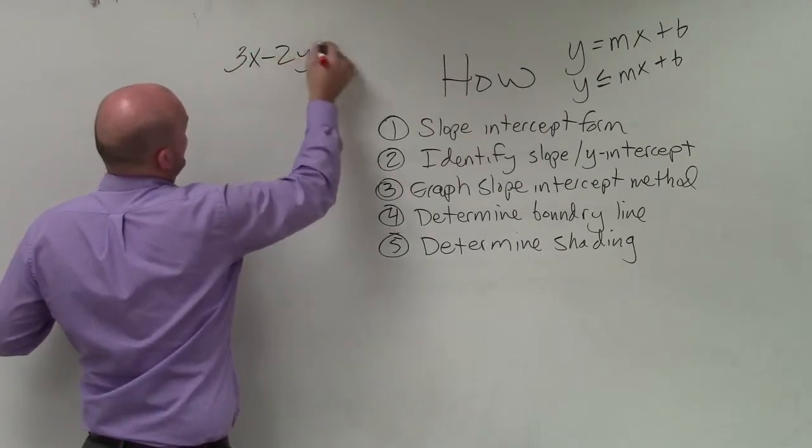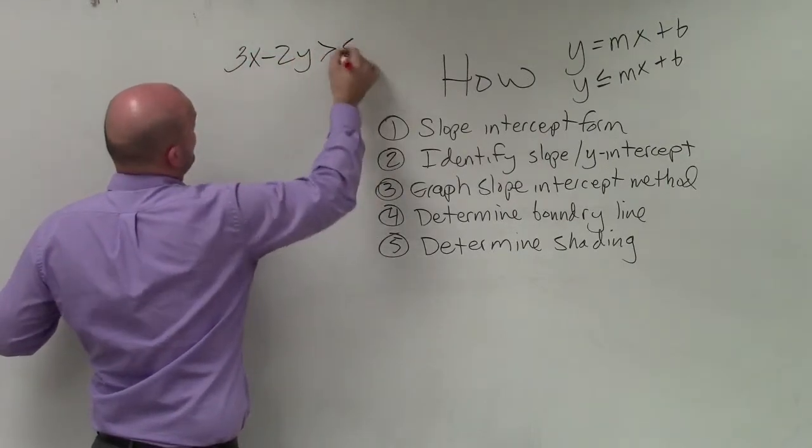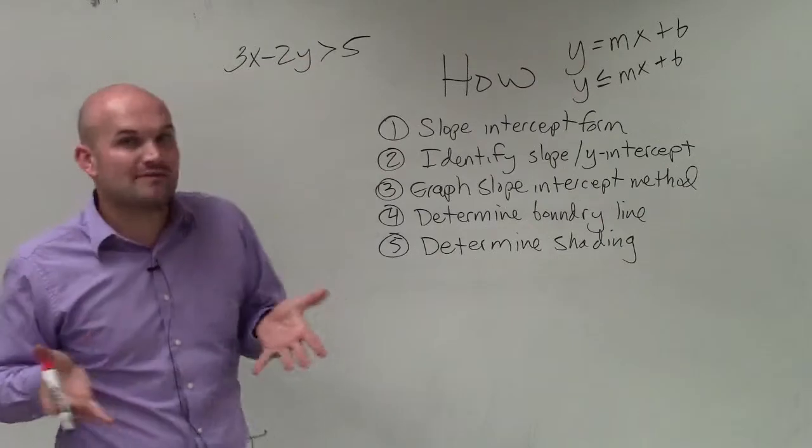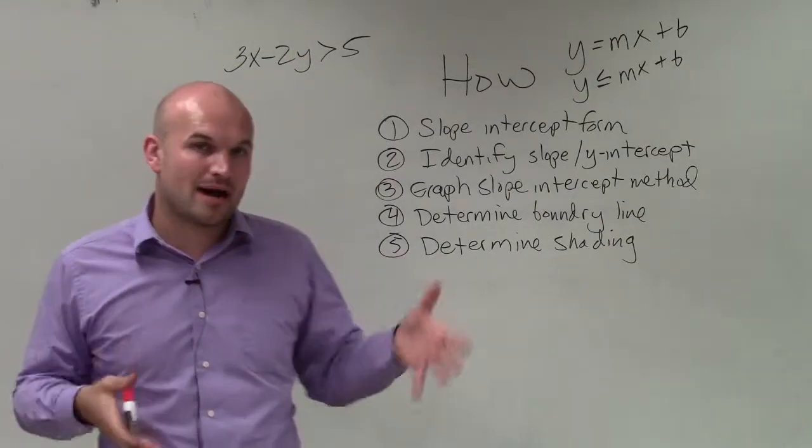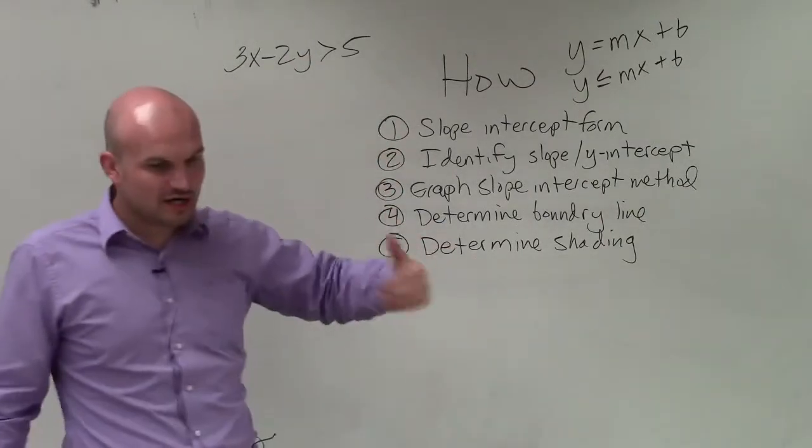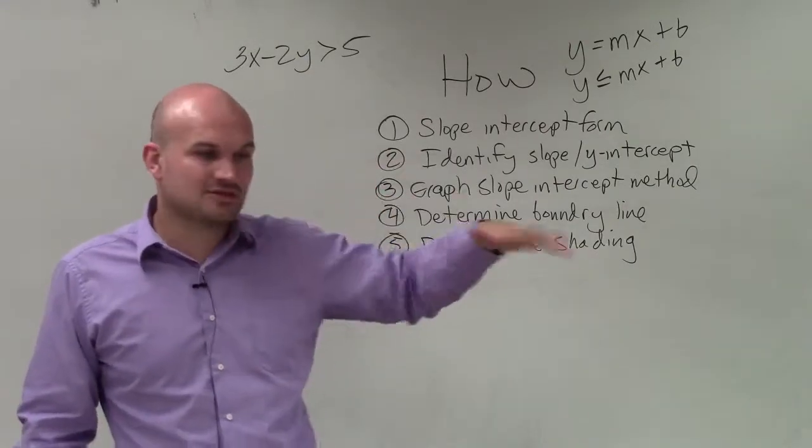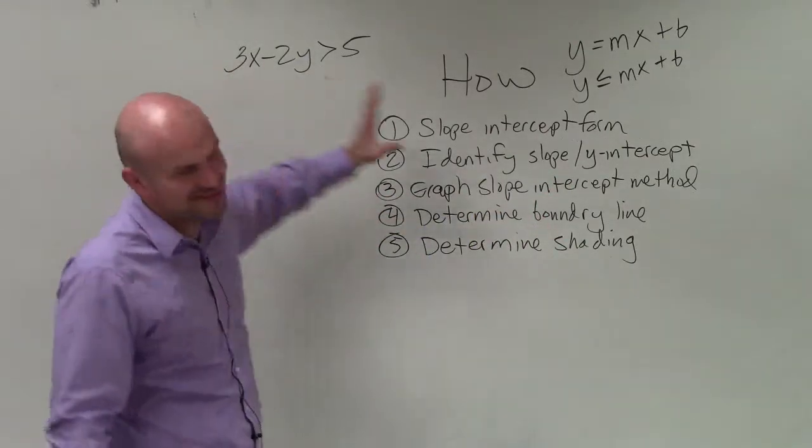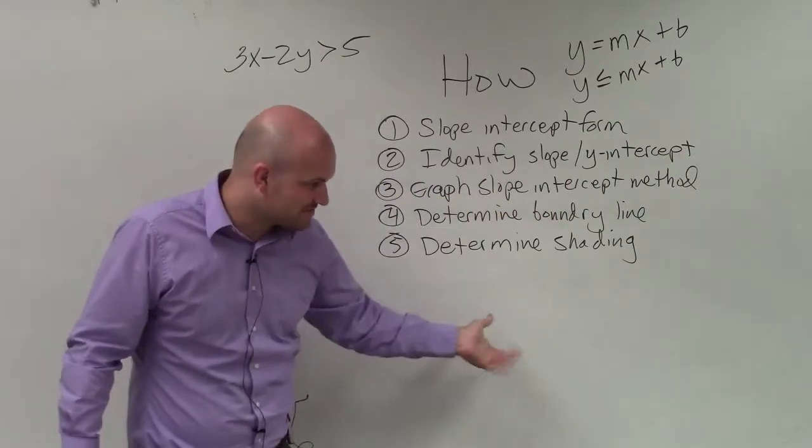3x minus 2y is greater than 5, you can still go ahead and graph using the intercept method. That's not a problem. However, I'm just not going to focus on that for this video.